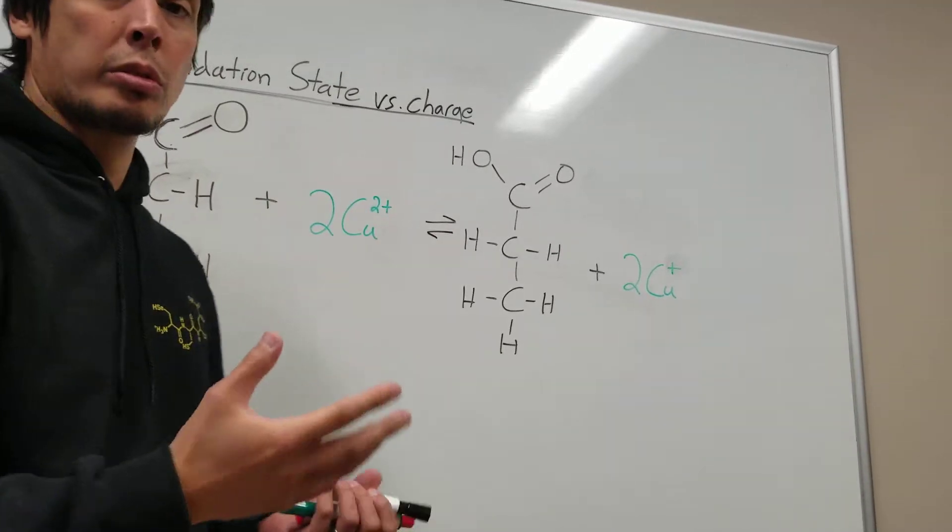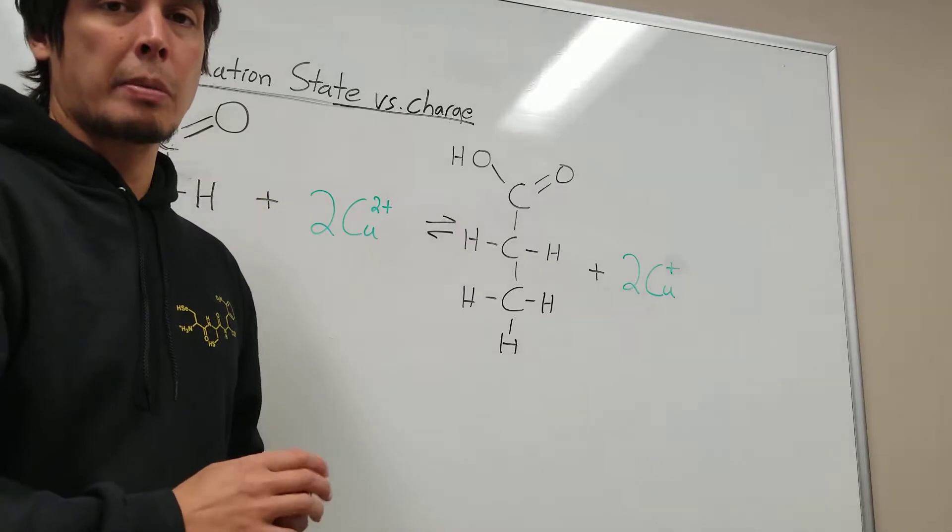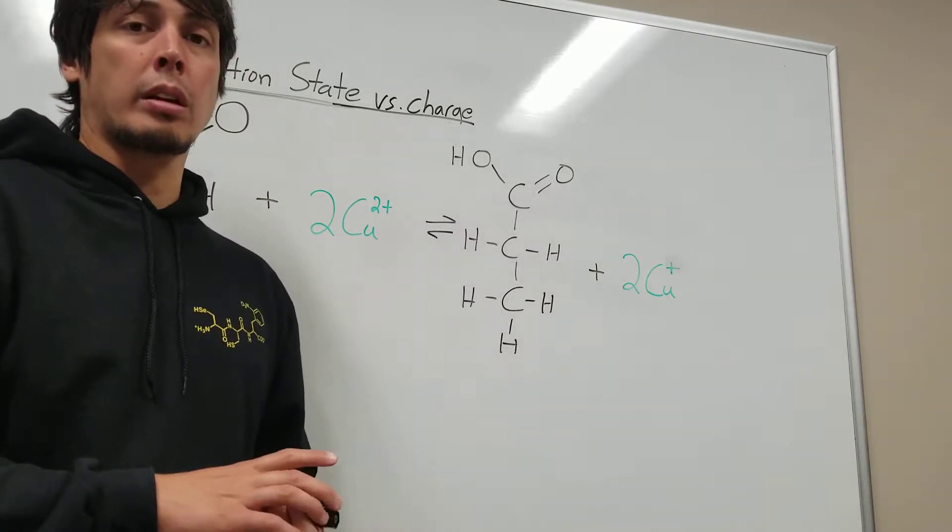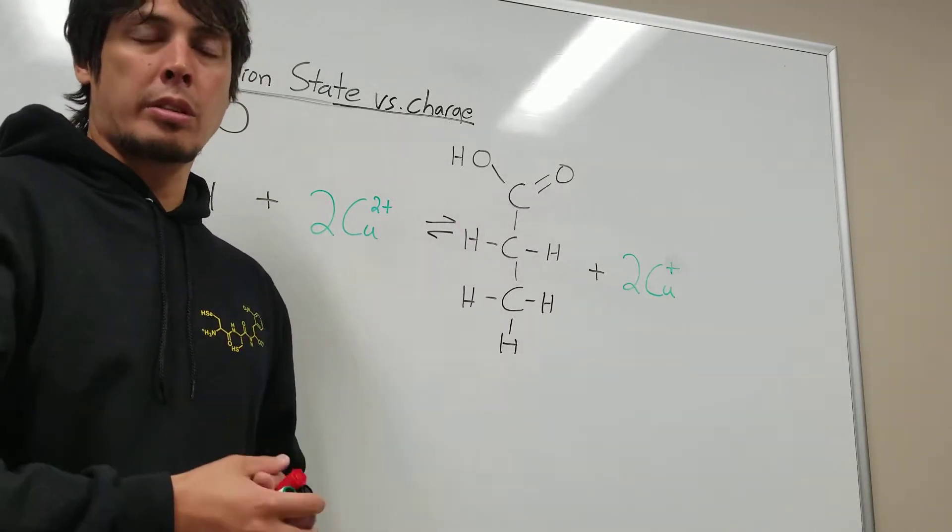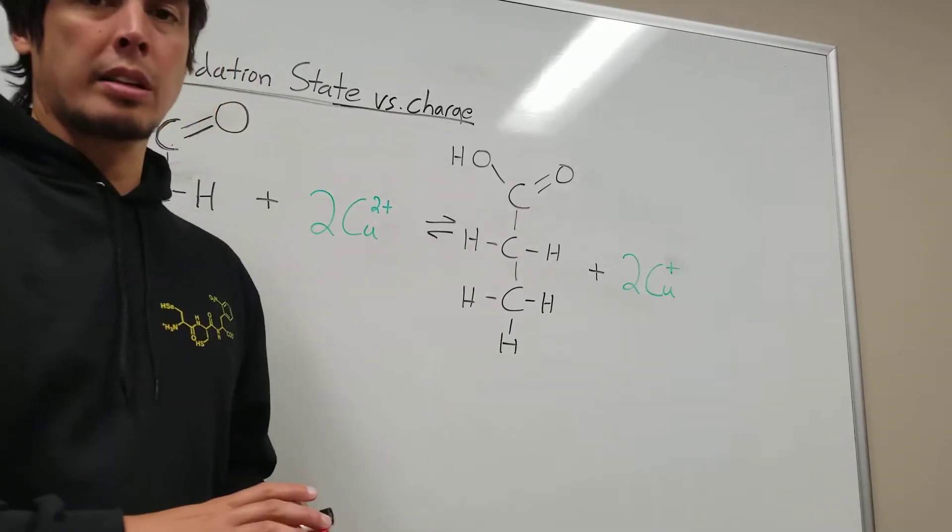We could also do that if there were a counter ion on each of these coppers. By knowing the charge of the anion, we could figure out what the oxidation state of the metal is.